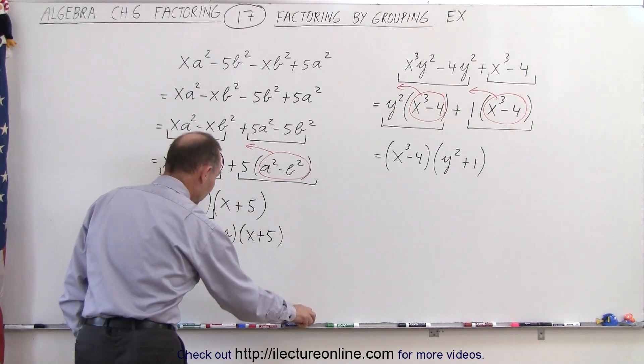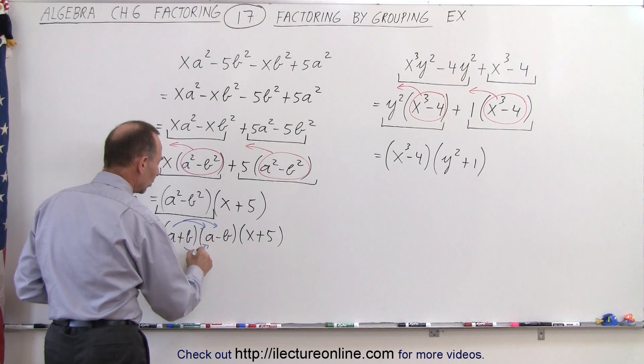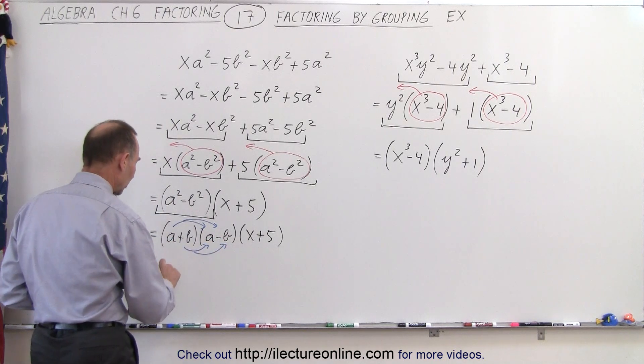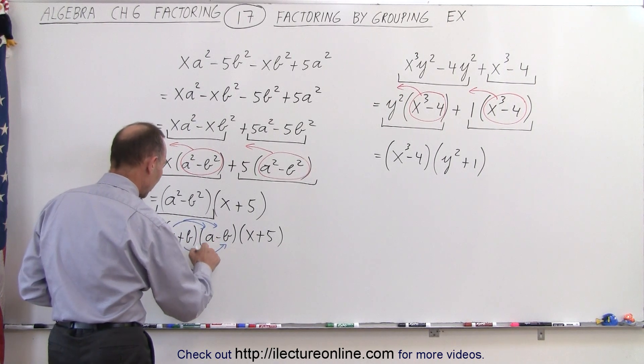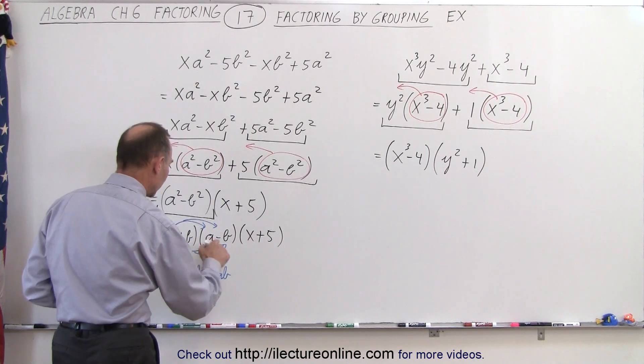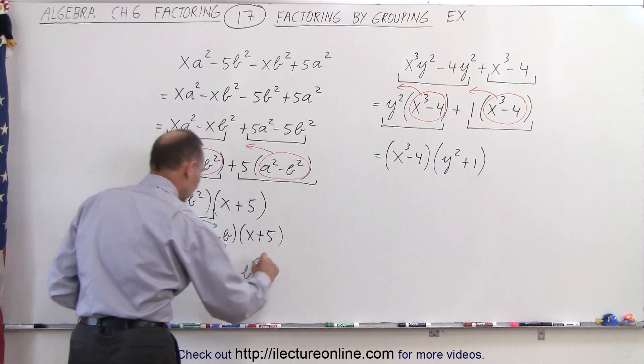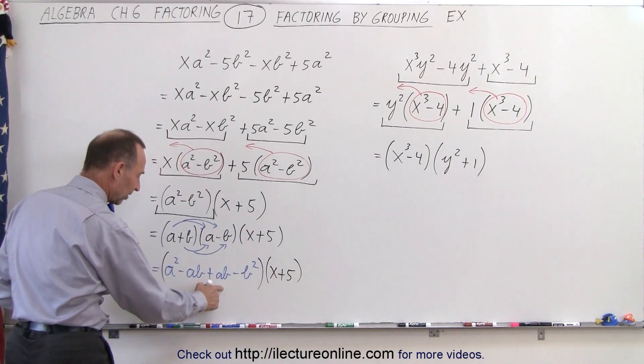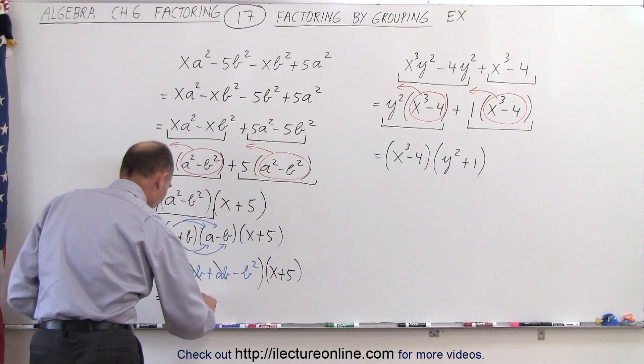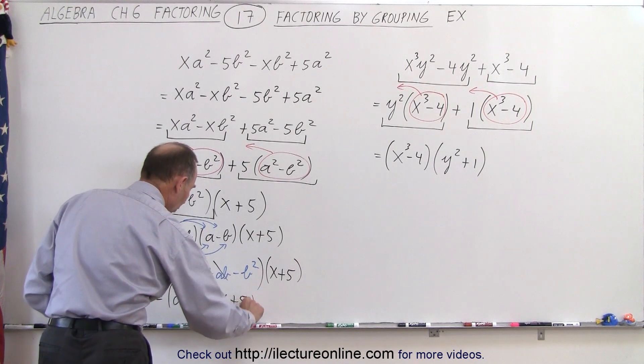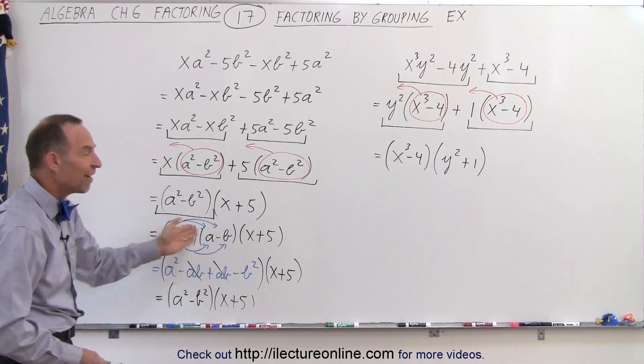Just to verify that that is indeed correct, we're going to use the method of distribution to multiply everything back together again to make sure we end up back with what we started with. So this can be written as a times a, that's a-squared; a times negative b, which is minus a b; b times positive a, which is plus a b; and plus b times negative b, which is minus b squared. Then we take the whole thing and multiply that times x plus five. Notice that the two middle terms cancel out, the minus a b plus a b, so we're left with an a-square minus b squared times x plus five, which is what we had over here.